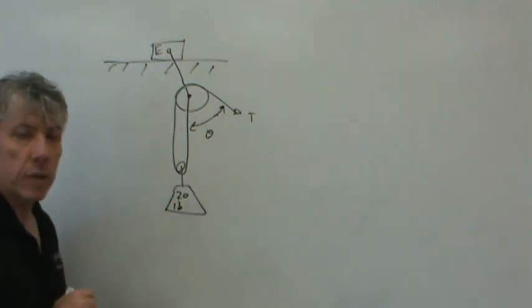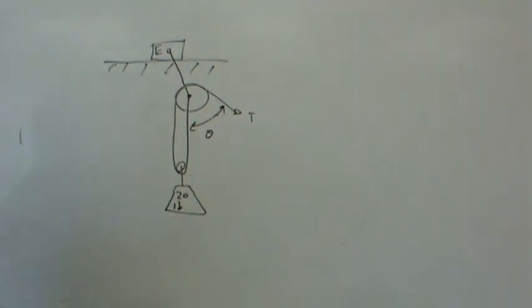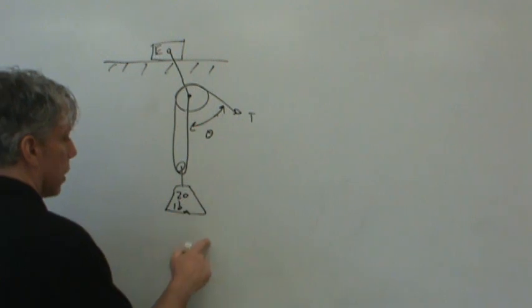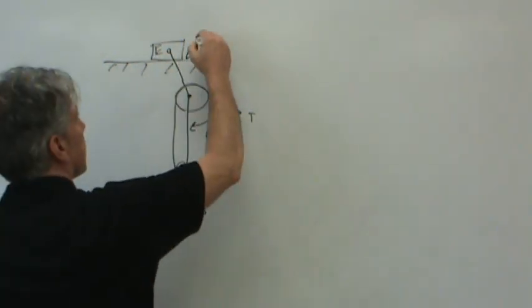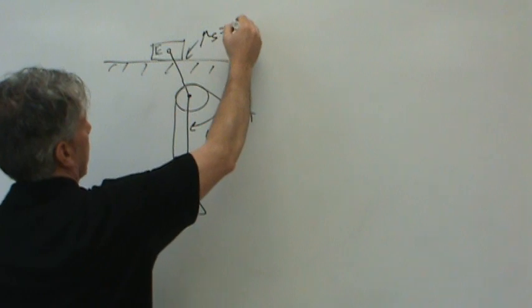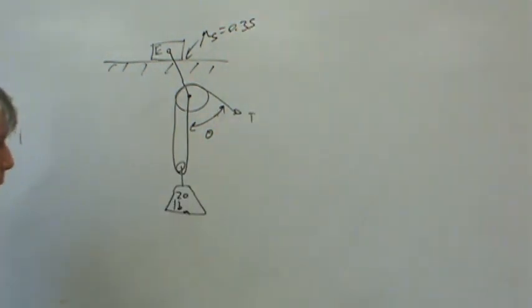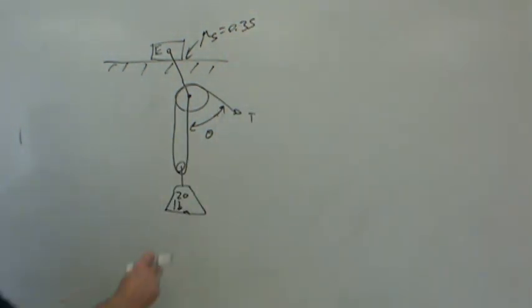This side has tension T. We're trying to figure out the maximum angle theta if the block is not to slip. So we're neglecting the weight of E. The only thing they've told us is that we've got a 20-pound block. Is that pounds mass or pounds force? Pounds mass. And a friction coefficient, a static coefficient of friction of 35%.